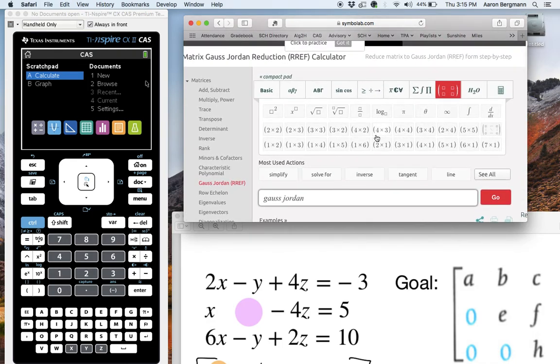So it types in Gauss-Jordan for you, and then you can type in, see I want a three by four, three rows by four columns. I'm going to type in 2, negative 1, 4, negative 3. I'm just typing right arrows after typing them all in. Right arrow, negative 4, right arrow, right arrow 6, right arrow, negative 1, right arrow 2, right arrow 10. Go.